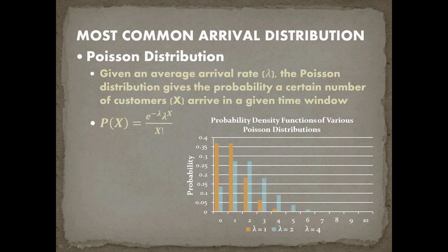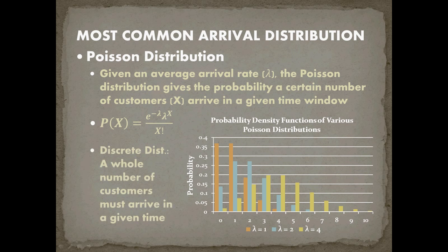With lambda equals two, you see the whole distribution shift to the right. And with lambda equals four, it moves even further right, where four is the most probable number to arrive in a given time period, but five, six, seven, eight, or nine are also likely. One thing to note is that the Poisson distribution is discrete — within a minute, only whole numbers of customers can show up; it's impossible for 2.2 customers to arrive in a specific time window.